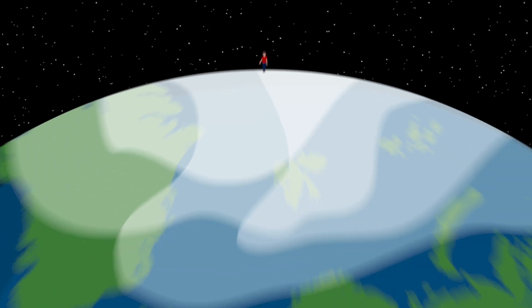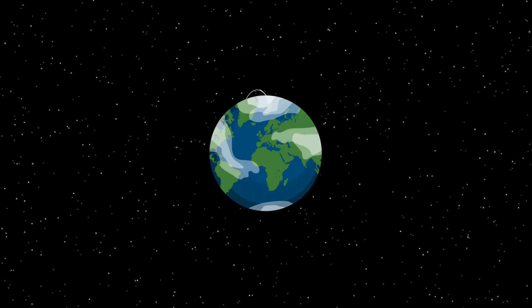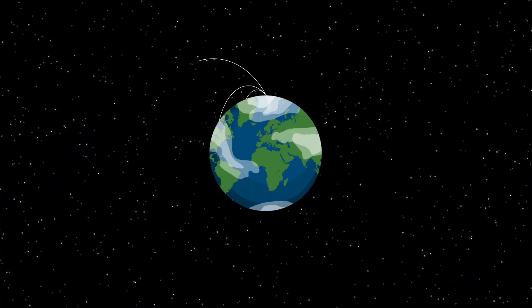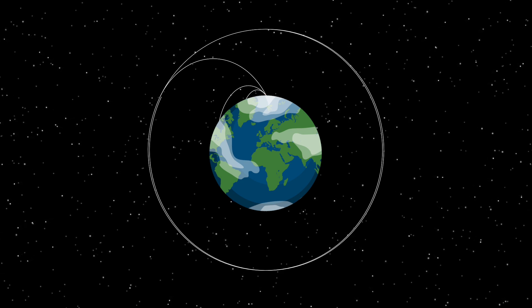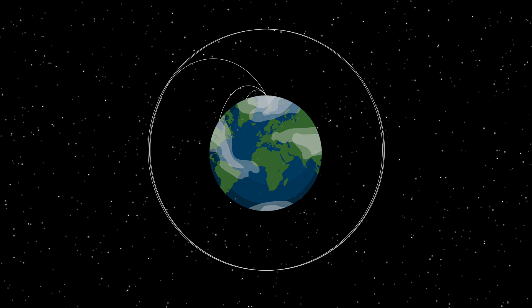But imagine if we threw the apple faster and faster, increasing the size of its parabola until it was so large that it reached out beyond the Earth. The apple would continually be falling as before, but the Earth's surface would always be out of reach.